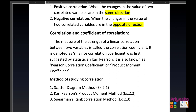In this chapter, we are going to learn three methods of studying correlation: first, the scatter diagram method; second, the Karl Pearson product moment method; and third, Spearman's rank correlation method. In this video, I am going to continue with the first method — the scatter diagram method — covering Exercise 2.1.